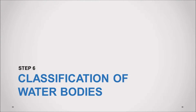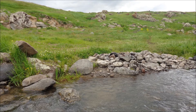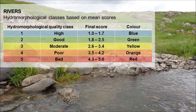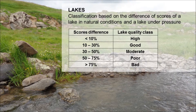Step 6: Classification of water bodies. Parameter scores from the field survey should be converted into a classification. For rivers, the final score is calculated from the mean scores and the hydromorphological quality class is determined based on a table which pairs score categories with their corresponding quality class marked with different colors. The lower the mean score, the better the water status. For lakes, classification is determined by the difference between scores for a lake in natural conditions and a lake under pressure.